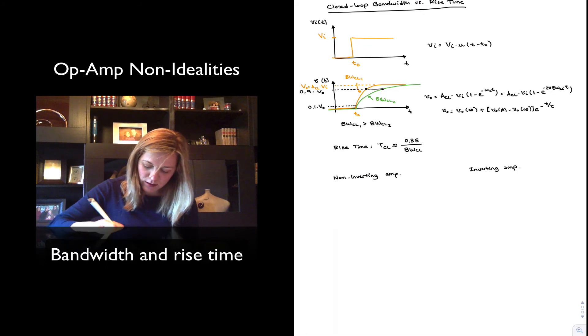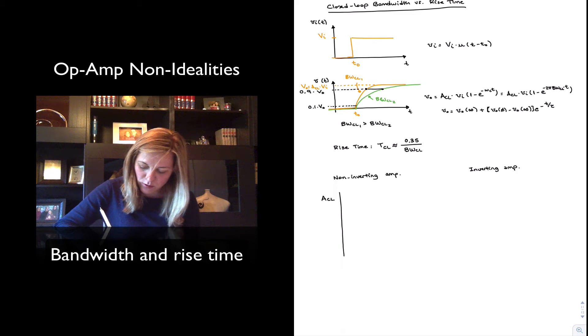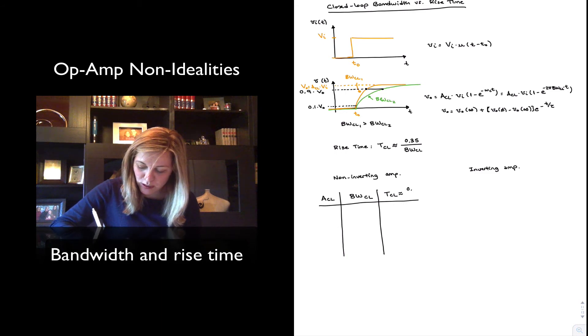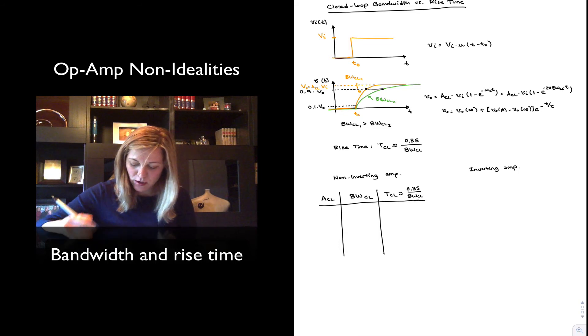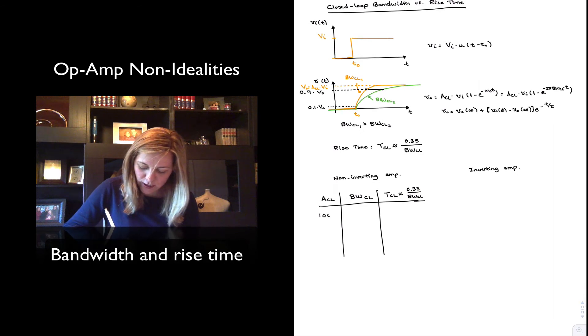And let's imagine we can tabulate the closed loop gain, what will be the closed loop bandwidth, and therefore what will be the expected rise time due to the bandwidth limitation, TCL. And that we are going to approximate it as 0.35 divided by the closed loop bandwidth using our equation above. And so for a gain of 100, a gain of 10 and a gain of 1.